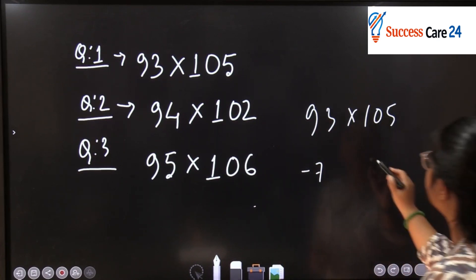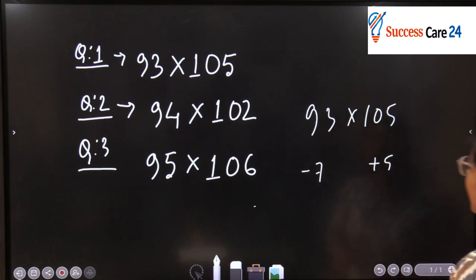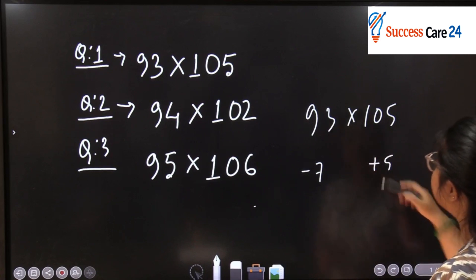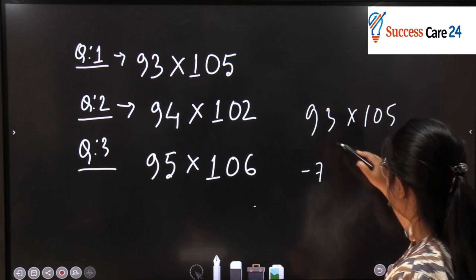And you have 105. 100 plus 5. So we will do it in a cross manner. All right?